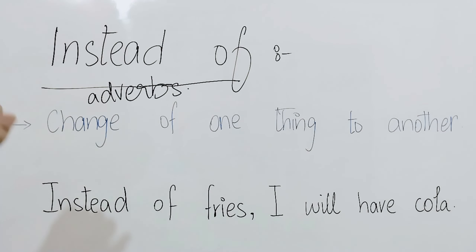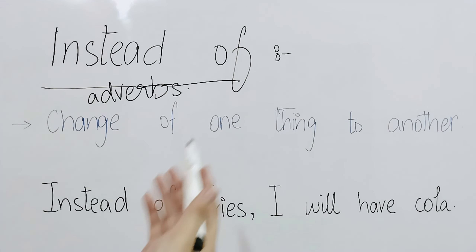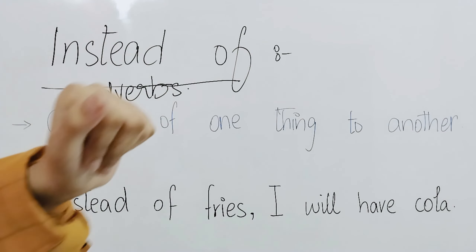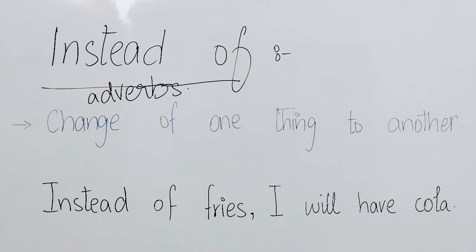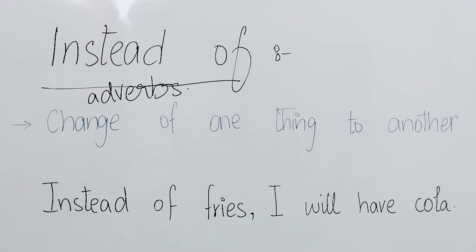We will use instead of when we have to change something — this is what I want, or this is what I want. So we will use instead or instead of when we exchange two things with each other. Specifically, instead of means a change of one thing to another — an exchange of one thing for another.